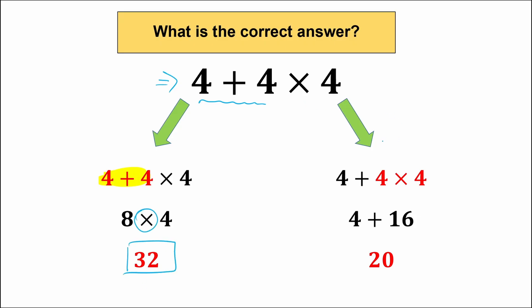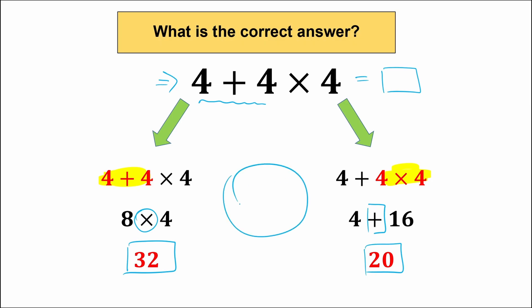But there's another branch: we multiply first. So we have 4 times 4, we multiply it first, and then we add 4 plus 16. So the correct answer is 20. It's really problematic to solve this question with two different answers — we just need one correct answer. A lot of students might be arguing: is it 32 or 20? Because both answers look valid depending on how you solve it.